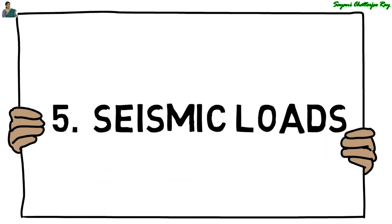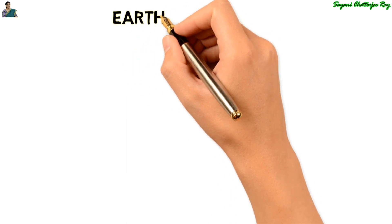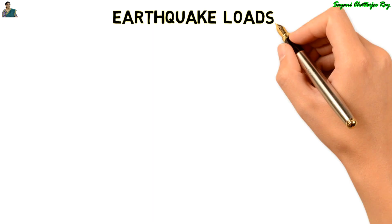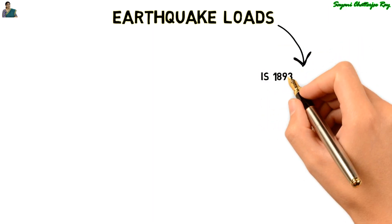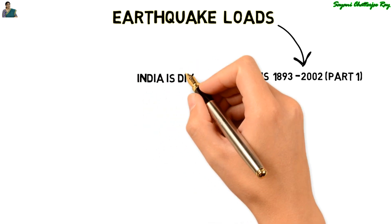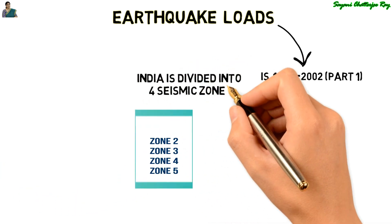And the last most important type of load is the seismic load. Earthquake load or seismic load depends upon the place where the structure is located. As per IS 1893 2002 part 1, our country India is divided into four seismic zones: seismic zone 2, 3, 4, and 5.